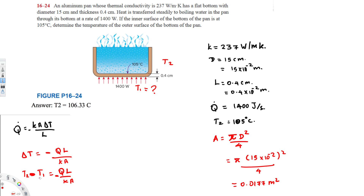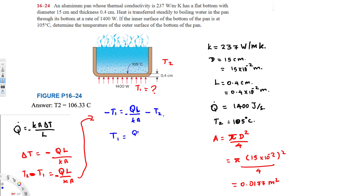We need to isolate T1, so we move T2 to the other side. This gives −T1 = −Q̇·L/(K·A) − T2. Multiplying everything by −1 to make T1 positive, we get T1 = Q̇·L/(K·A) + T2. This is the equation we will use.